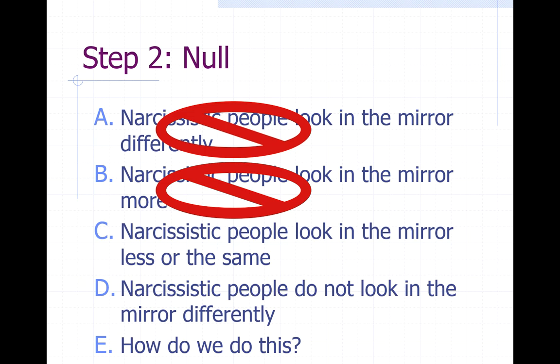'Looking in the mirror more' also implies a difference. For a null hypothesis, even in a one-tailed test, there has to be some element of the participants being the same — looking the same or less, or the same or more. So the null is: narcissistic people look in the mirror less or the same. Note that 'do not look in the mirror more' is equivalent to 'look in the mirror less or the same,' so don't get tripped up by different wording.